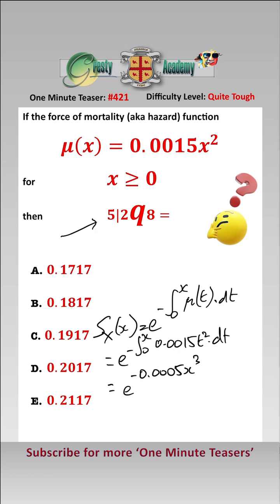Now we have a look at this. What this means is that an 8-year-old dies in 2 years but deferred by 5 years, i.e., between ages 13 and 15. Therefore, that is equal to S(13) minus S(15) over S(8).